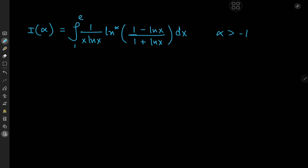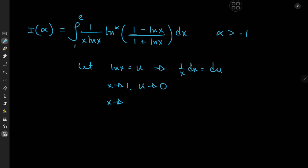It seems logical to start off with the substitution letting log x equal u, which implies on differentiation that 1 over x dx equals du. Now for the limits: as x approaches 1, we have u approaching log 1, which is 0, and for x approaching e, we have u approaching 1.